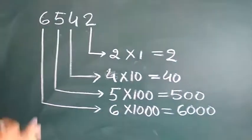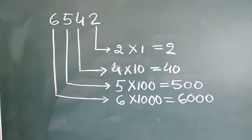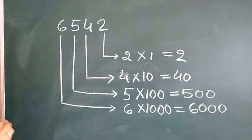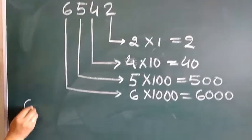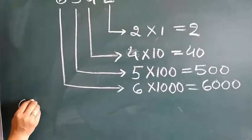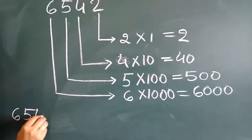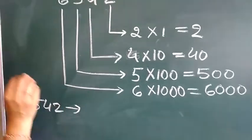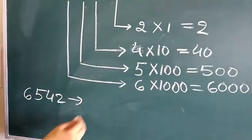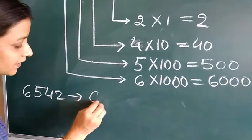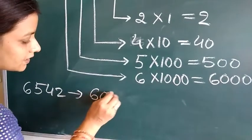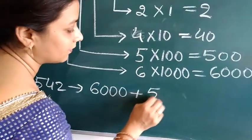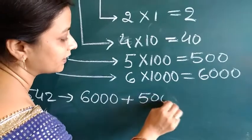Now we find out the place values and see the expanded form of 6,542. The expanded form of 6,542 is 6,000 + 500 + 40 + 2.